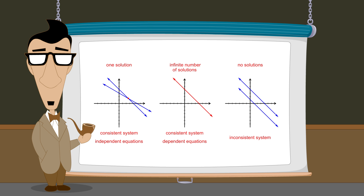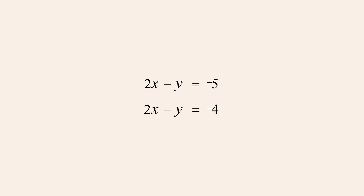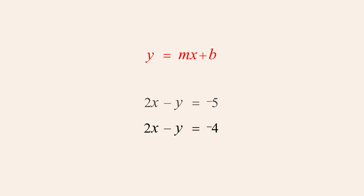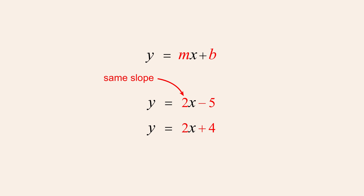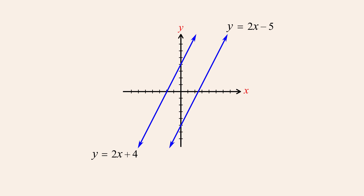We can quickly determine which type of solutions we should expect by writing the equations in slope-intercept form. Let's say we are given a system of two linear equations in two variables written in standard form. If we rewrite the equations in slope-intercept form y equals mx plus b, by examining the constants m and b which correspond to the graph's slope and y-intercept, we can tell whether the system has one solution, no solutions, or an infinite number of solutions. If m is the same in both equations and b is different, then the lines have the same slope but different y-intercepts, so the lines are parallel. Since distinct parallel lines don't intersect, the system has no solutions and is therefore inconsistent.